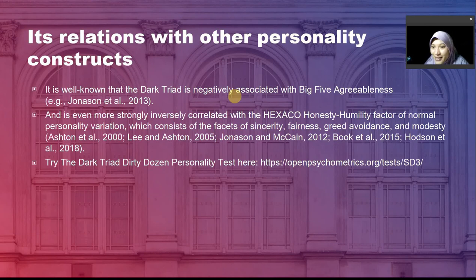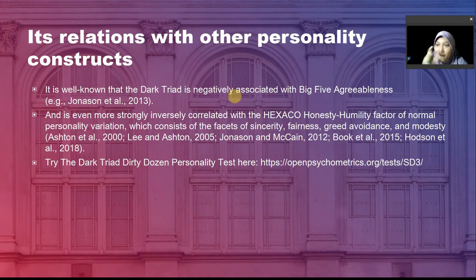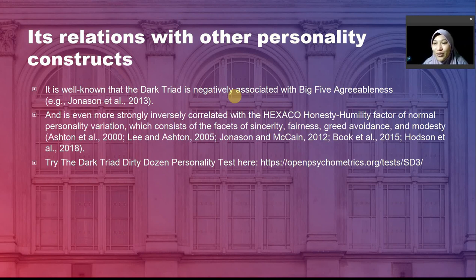How the dark triad is related to other personality constructs is the most interesting part. The Big Five personality theory is more widely accepted among personality psychologists. It is important to understand how this newer theory relates to the widely accepted Big Five. The dark triad is negatively associated with a very specific dimension in the Big Five — the five-factor model — which is agreeableness, because agreeableness reflects our orientation toward other people.